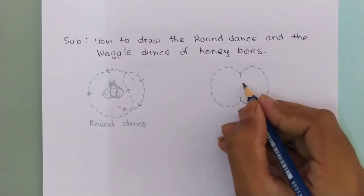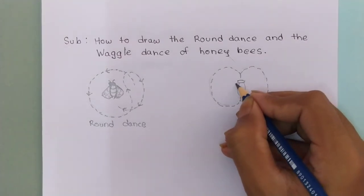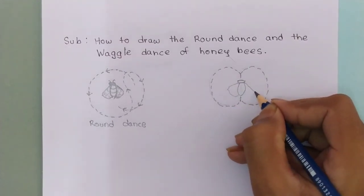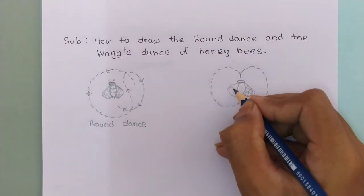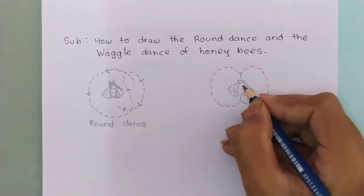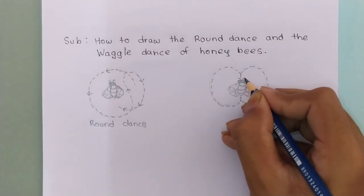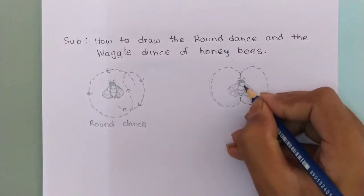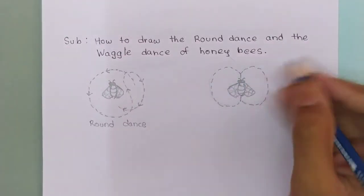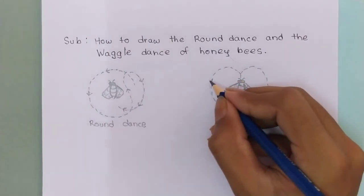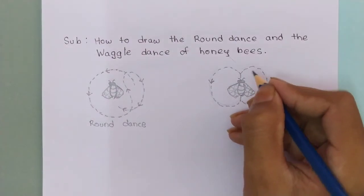Again in the center we will draw the structure of the honeybee in this way. At last we will add some arrows in this way — this is very important to add arrows.